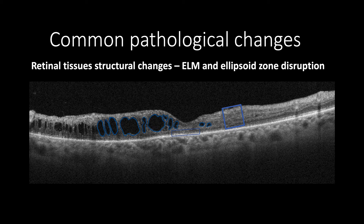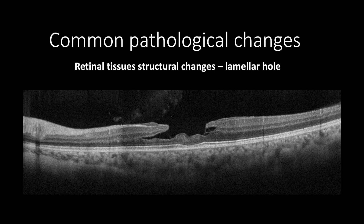As intra-retinal cysts enlarge in size and collapse with or without vitreomacular traction, evulsion of inner retinal tissue may occur. Evulsion of the cystic roof will cause a lamellar hole, leaving the retinal surface with a lamellar defect of inner retinal tissues.